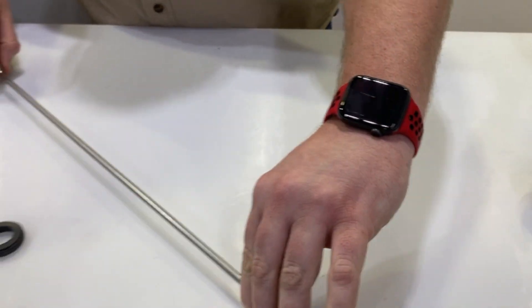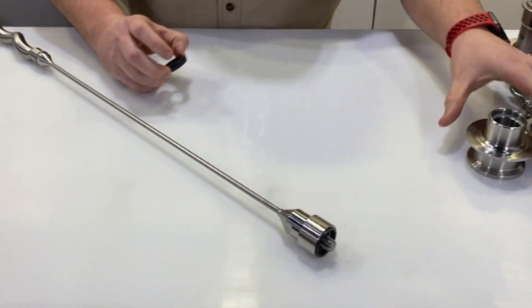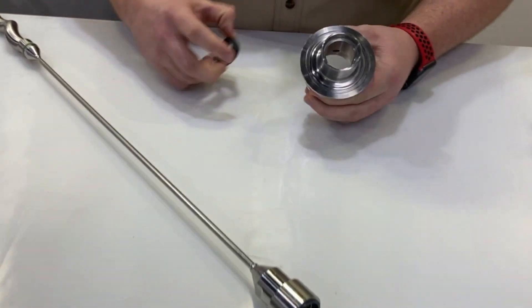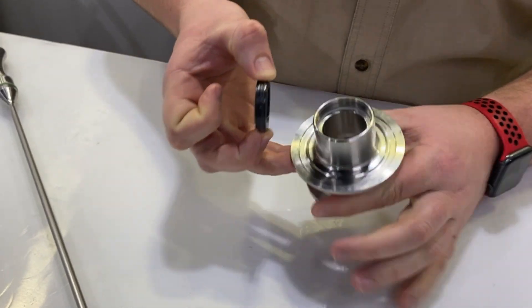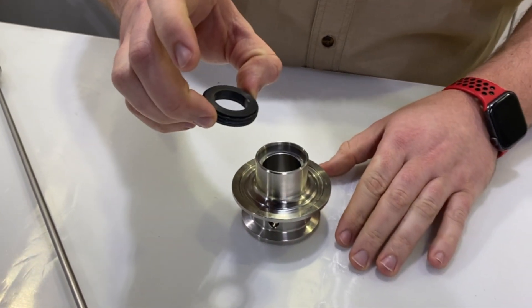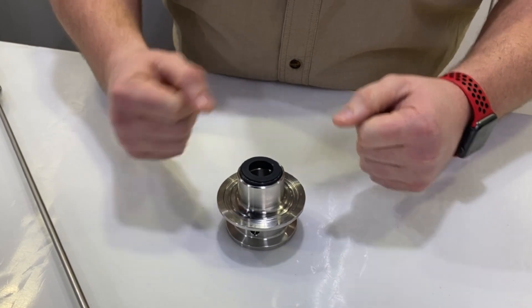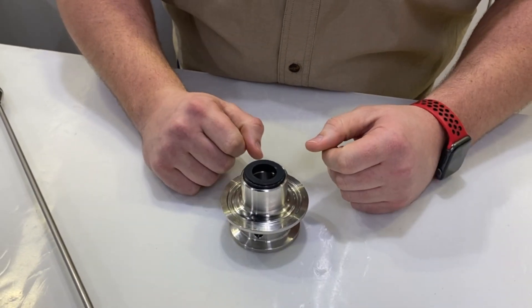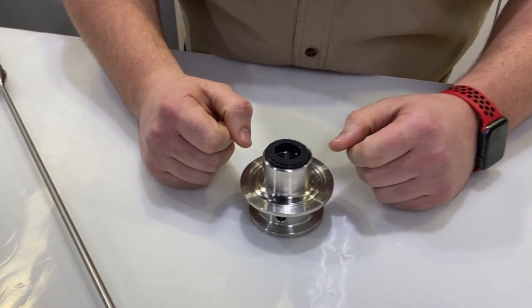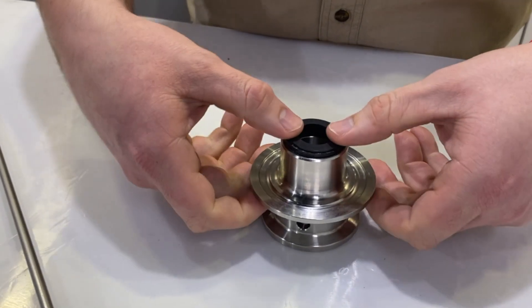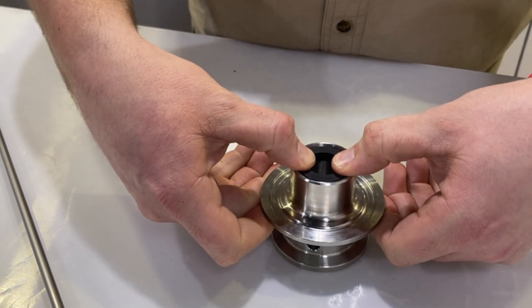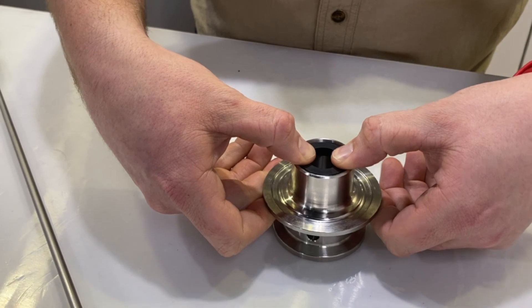Set that aside until we have the stationary face installed, which again we're going to press down onto the shoulder. Just be sure that when you're installing this that your hands are clean and free of any particulates that could cause damage to the seal face. Press it straight down until it's firmly sitting on that shoulder.